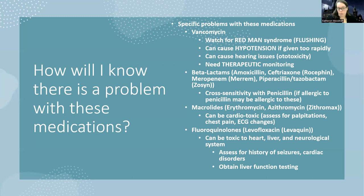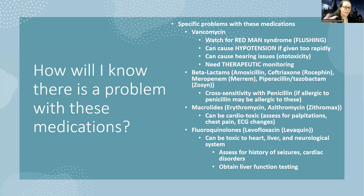The therapeutic range for vancomycin is approximately 10 to 20. The trough is drawn about 30 minutes before the next dose to see the lowest level in the system. Make sure you time it right and draw before starting the next dose. Beta-lactams have a cross-sensitivity to penicillin, so if a patient is allergic to penicillin, they might also be allergic to these. Macrolides can be cardiotoxic, so they may need ECG monitoring; watch for palpitations, chest pain, or signs of dysrhythmias. Fluoroquinolones can be toxic to the heart, liver, and neurological system — assess any history of seizures or cardiac disorders, and consider liver function testing beforehand.